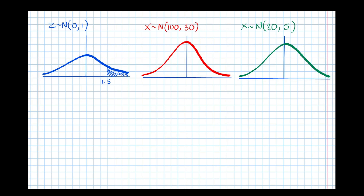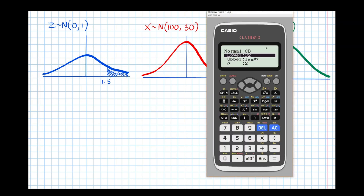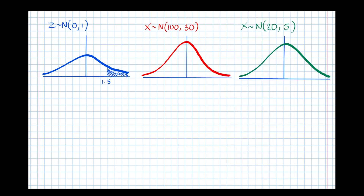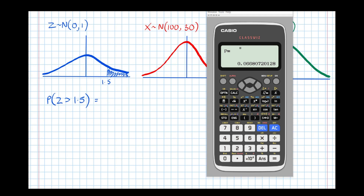So in the calculator, if I go to normal distribution mode, normal cumulative distribution, the lower bound is 1.5 and the upper bound is infinity — our approximation for infinity is 10 to the power of 99, the biggest number the calculator can handle. Our standard deviation is 1 and our mean is 0. So the probability is 0.0668, meaning P(Z > 1.5) = 0.0668.